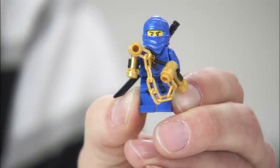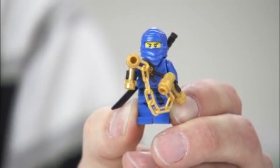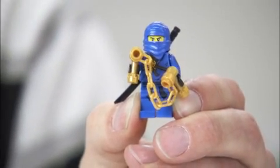But first I'm going to show you this guy. This is Jay, he also comes in the box. It's the Blue Ninja. He has these golden nunchucks.